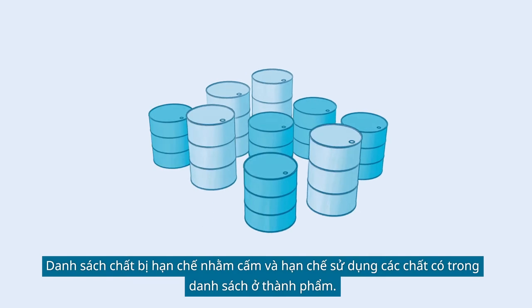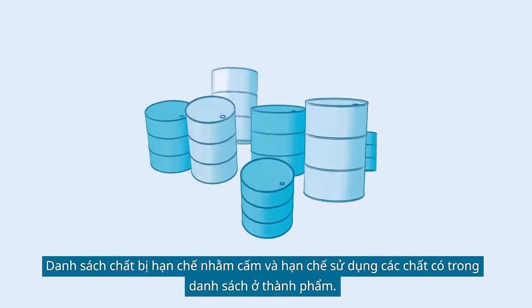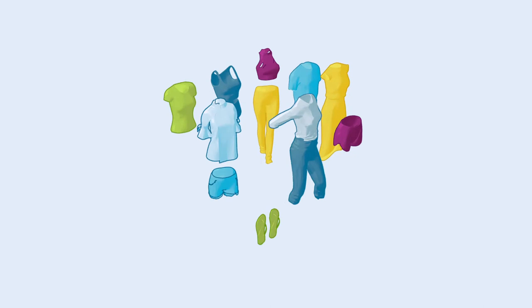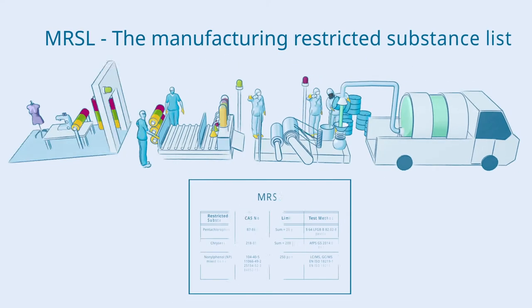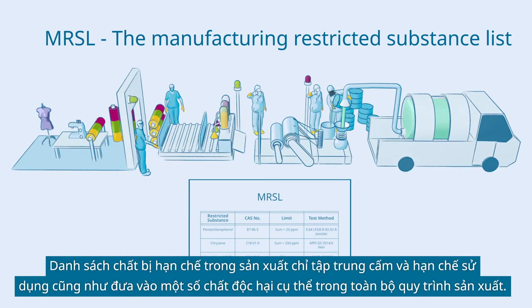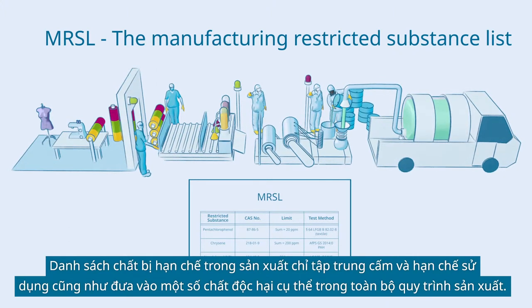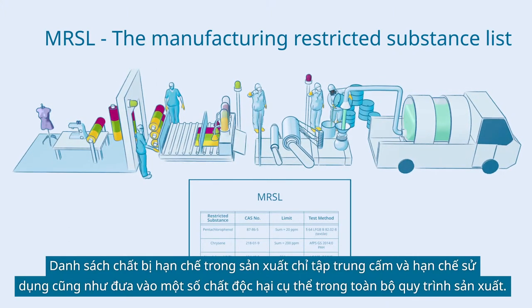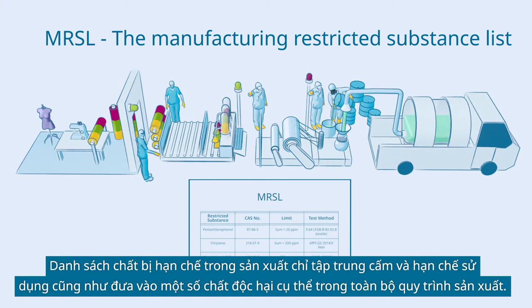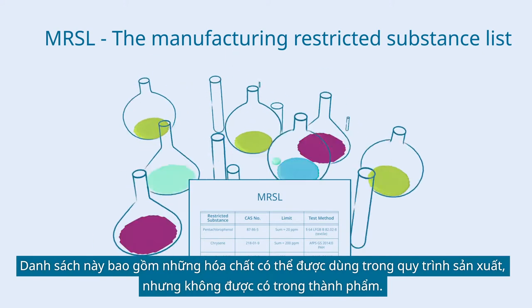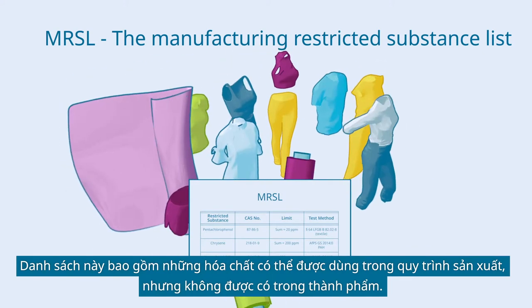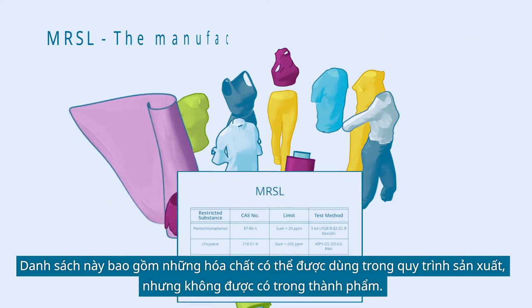The Restricted Substance List aims to prevent and limit the use of restricted substances in finished products. The Manufacturing Restricted Substance List focuses on preventing and restricting the usage and presence of specific hazardous substances throughout the entire manufacturing process. This list includes processed chemicals which may be used in manufacturing but are not present in the end product.